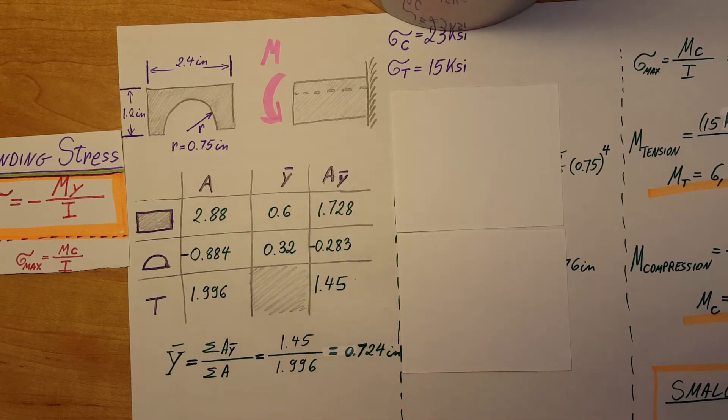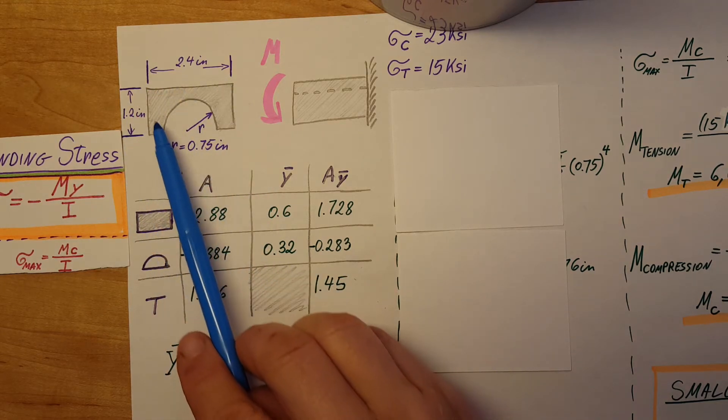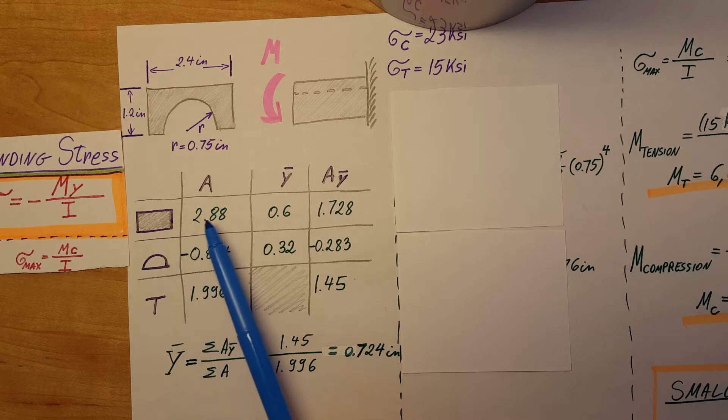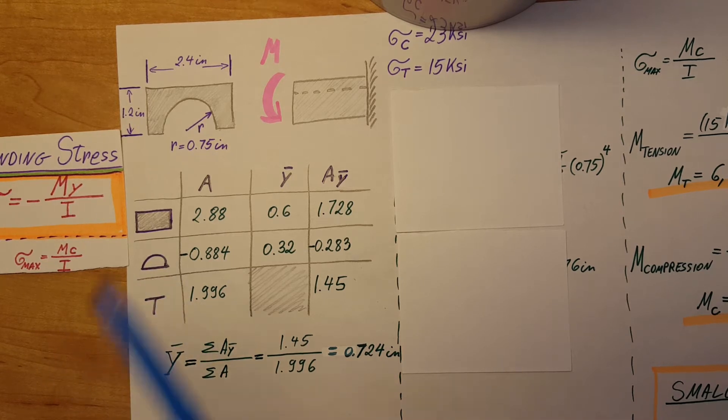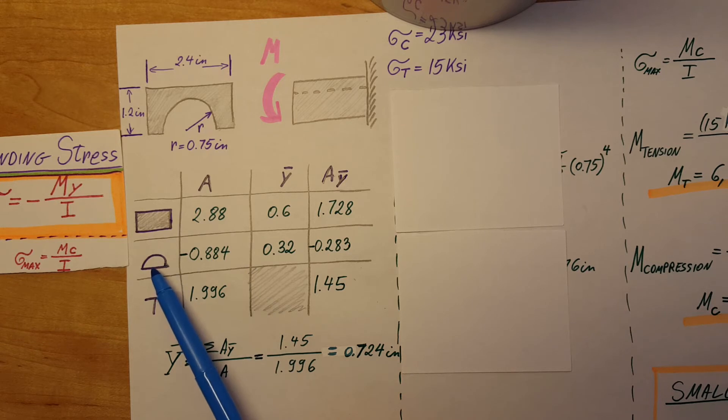To find the neutral axis, I like to do it with a nice table. Over here I can mark the shapes I'm working with. First I'll calculate the area and everything for the rectangle, then I'll subtract the half circle from it. I shade the rectangle because it's positive, and leave the half circle unshaded to remind myself to use a negative since we're cutting it out.